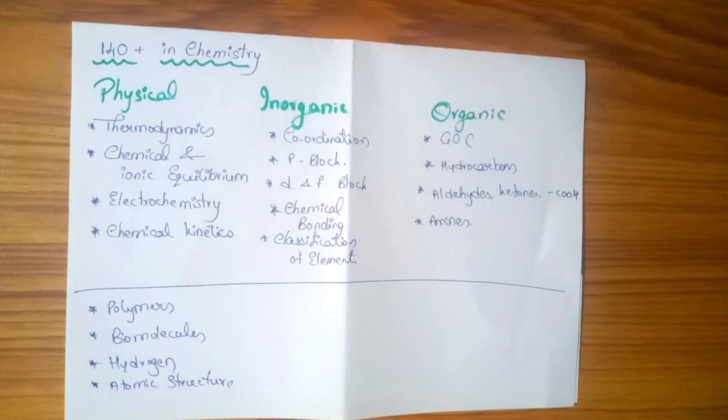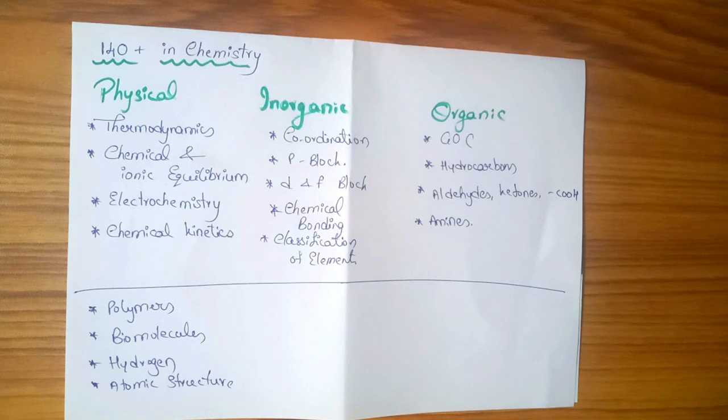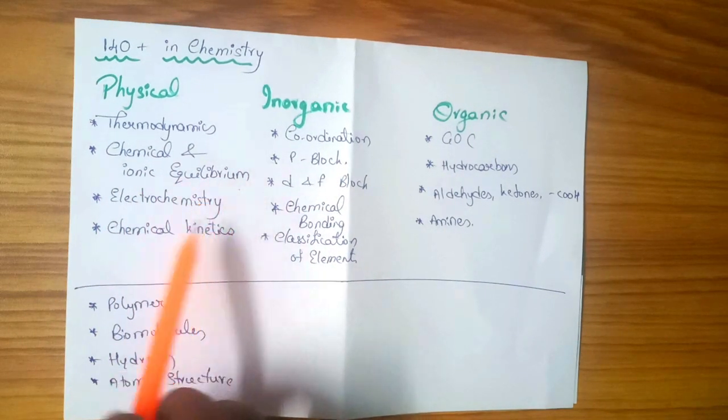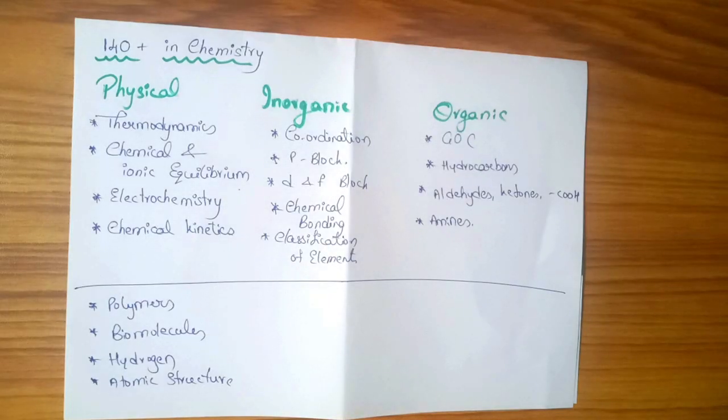First, we have to understand the question. The question is 4-5 lines, we have to identify what to apply. In thermodynamics, ionic equilibrium, and electrochemistry, you need to understand how to apply the topic.